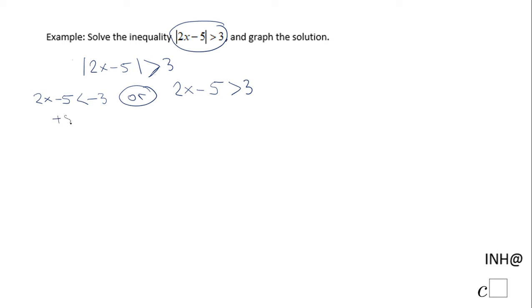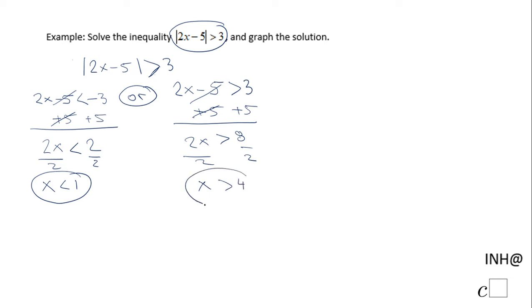I'm gonna add 5 here and we have 2x less than negative 3 plus 5 is positive 2. Divided by 2 we get x less than 1. I'm gonna do the same thing with the other inequality. I'm gonna add 5, I have 2x greater than 8. Divided by 2 we have x greater than 4.